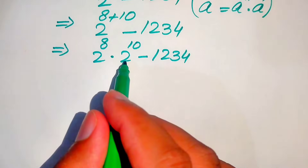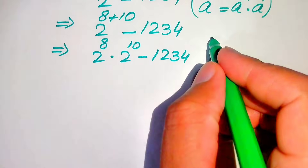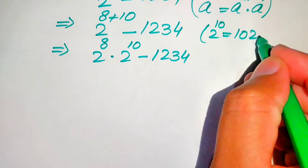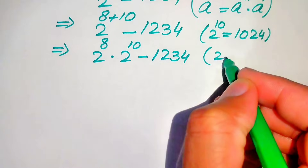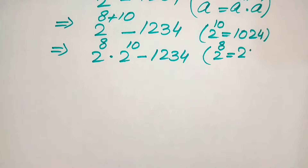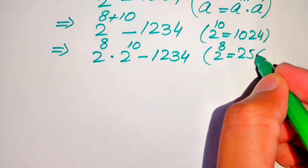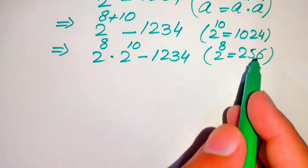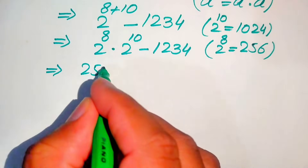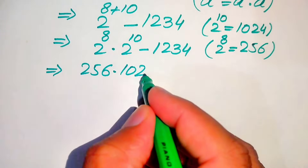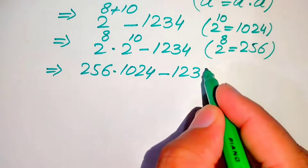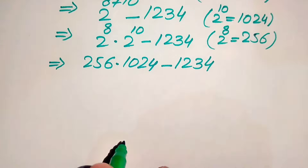We now find the values: 2 to the power of 10 equals 1024, and 2 to the power of 8 equals 256. Replacing these values, the expression becomes 256 multiplied by 1024 minus 1234.